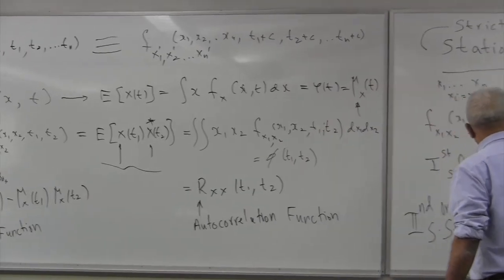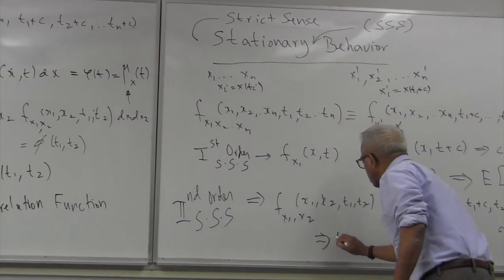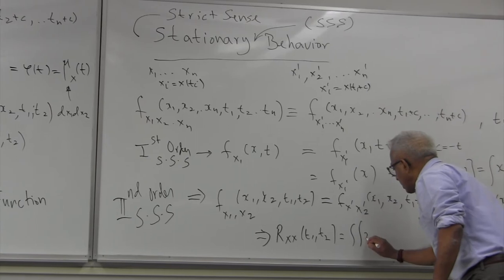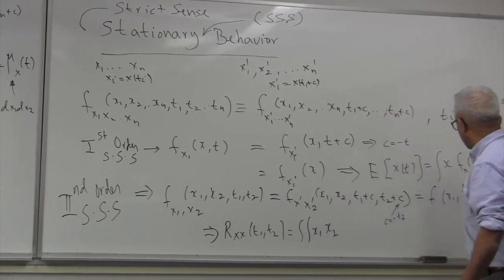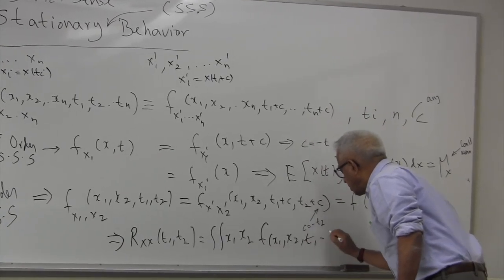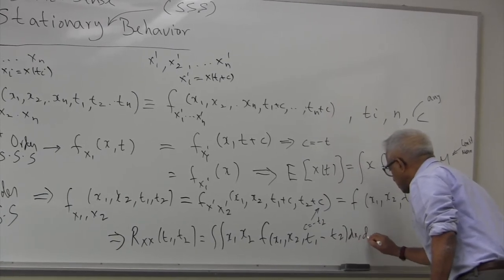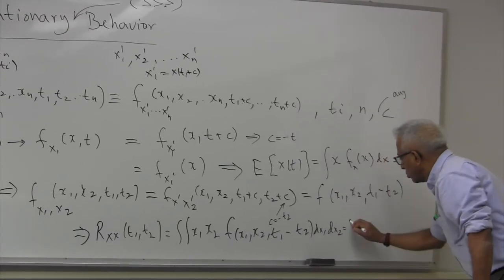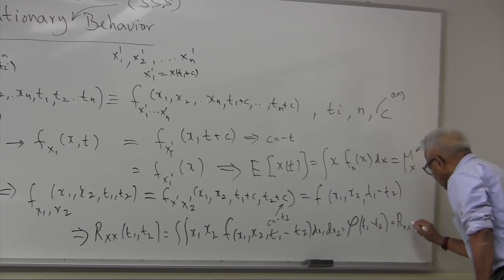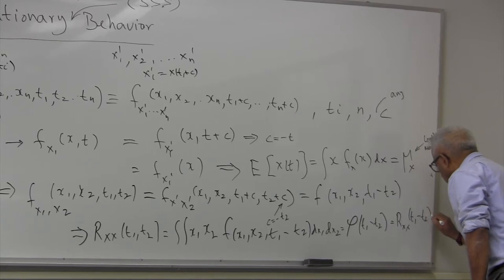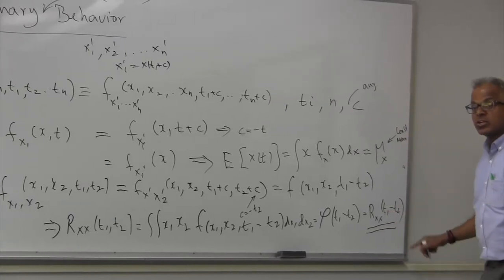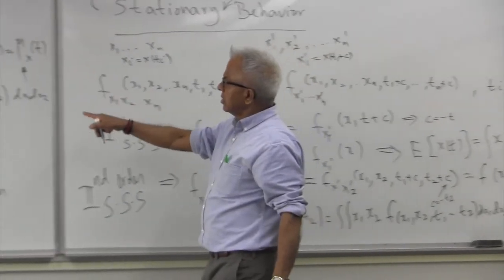So we can compute the autocorrelation function. In this case the autocorrelation function, which in general is a function of t1 and t2, becomes a double integral of x1 times x2 times the density function f(x1, x2; t1 minus t2) dx1 dx2. When x1 and x2 are integrated out, you get some function of t1 minus t2. So if a process is second order strict sense stationary, the autocorrelation is only a function of t1 minus t2, not t1 and t2 separately.